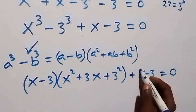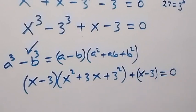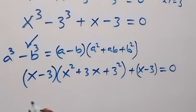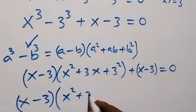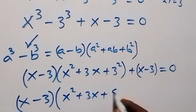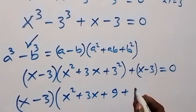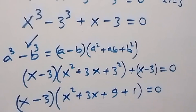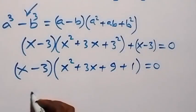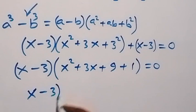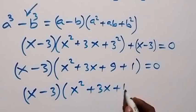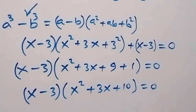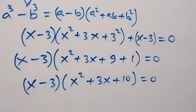From here we can factor x minus 3 out. Then we have x minus 3, into bracket x squared plus 3x plus 3 squared, plus 1, equals to zero. So we have x minus 3 into bracket x squared plus 3x plus 10, equals to zero.